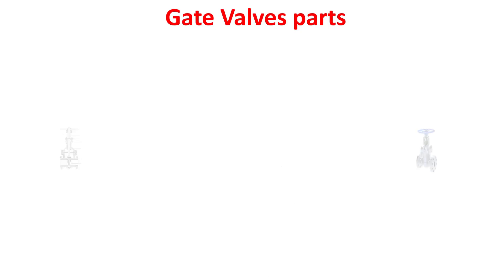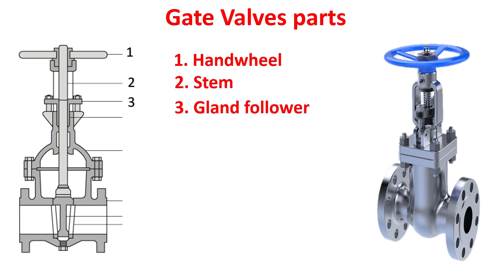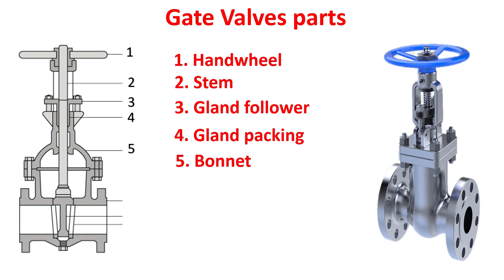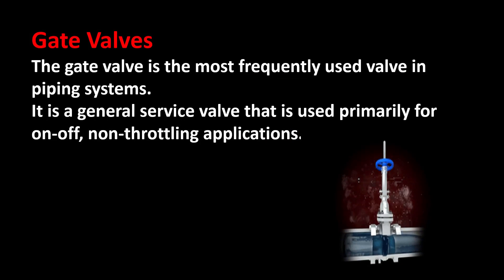Gate valve parts: hand wheel, stem, gland follower, gland packing, bonnet, body, wedge-shaped gate, seat ring.